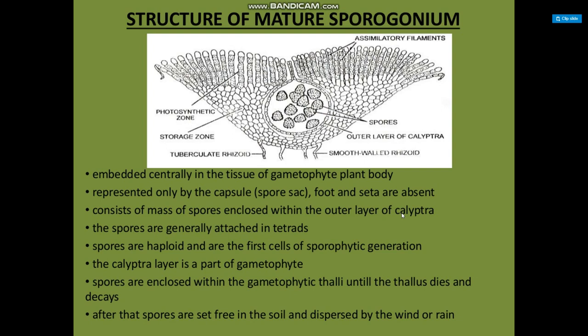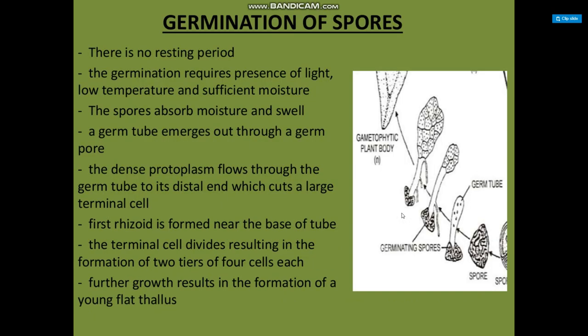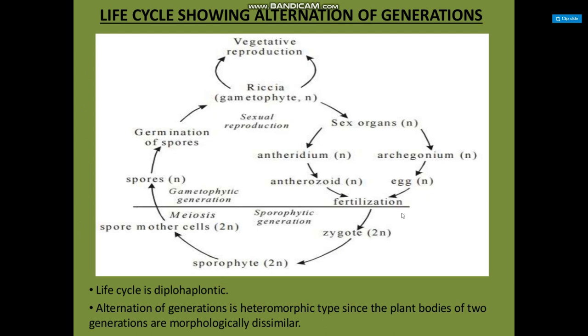After that, spores are set free in the soil and dispersed by wind or rain. Spores are the first cell of the gametophytic generation. Each spore consists of a mass of cytoplasm with a small haploid nucleus and a spore wall differentiated into outer exine and inner intine. The exine is hard and thick, while the intine is thin and translucent. Germination of spores: there is no resting period. Germination requires the presence of light, low temperature, and sufficient moisture. The spores absorb moisture and swell, and a germ tube emerges through a germ pore. Dense protoplasm flows through the germ tube, cutting off the last terminal cell. The first rhizoid is formed near the base of the tube, and the terminal cell divides resulting in the formation of two tiers of four cells each. Further growth results in the formation of a young thallus.